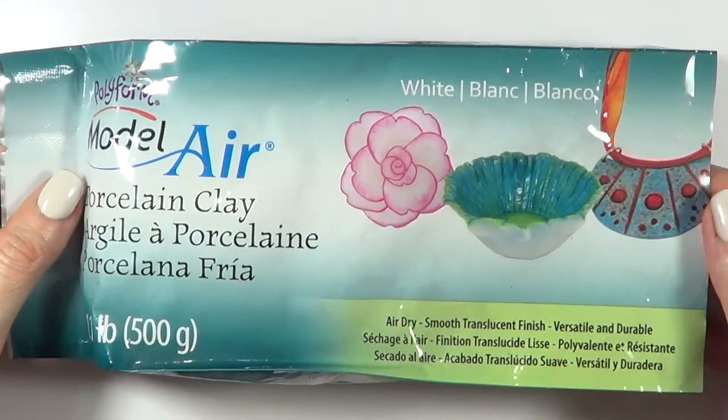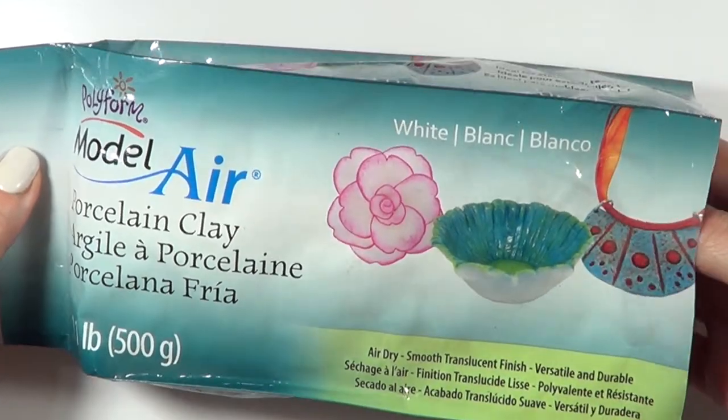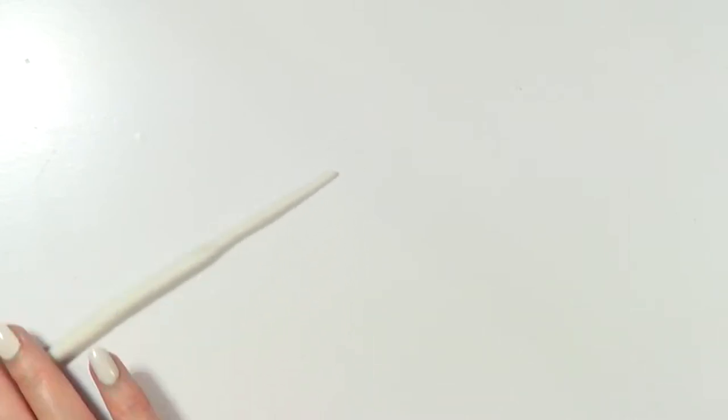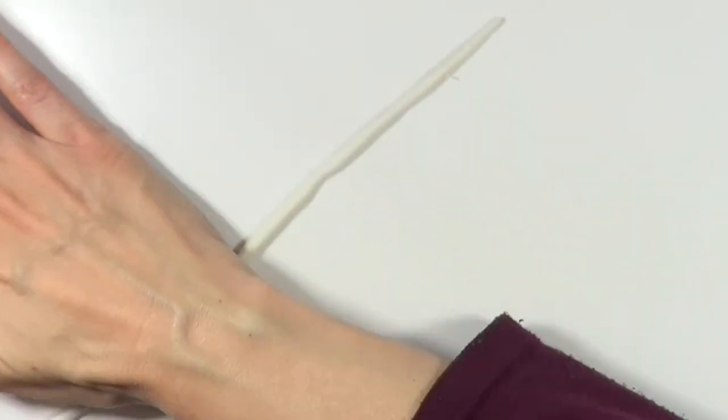I'm going to be using this porcelain clay, you can use polymer clay as well. You don't need that much actually, I'm just going to be rolling this into a shape of a really thin sausage or snake.